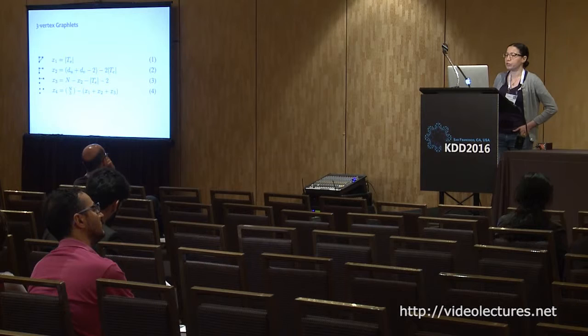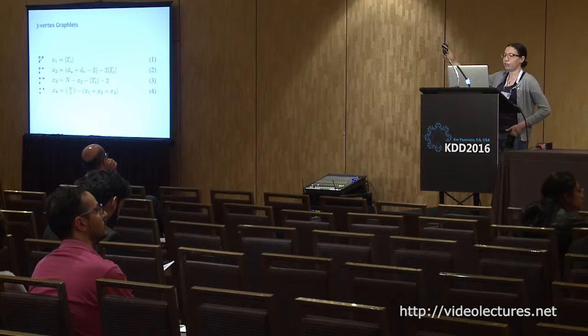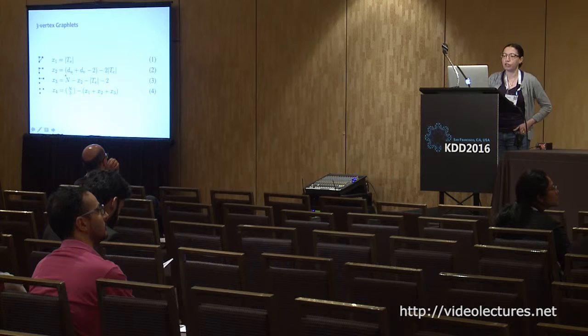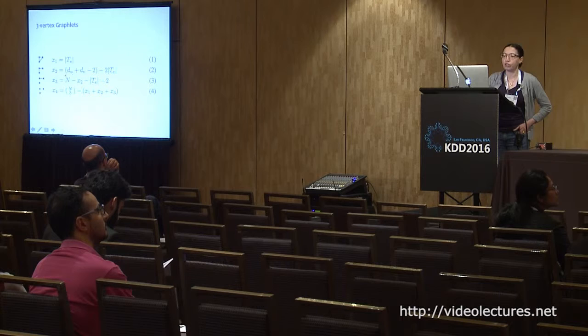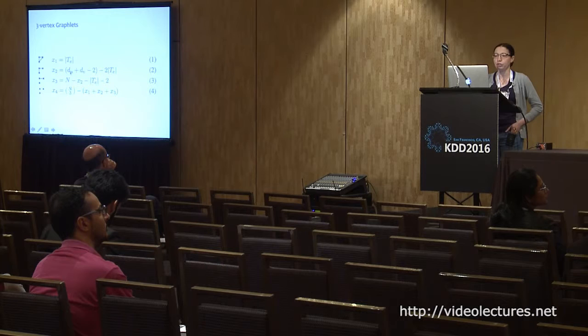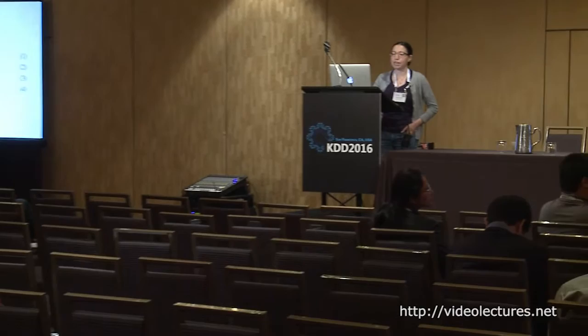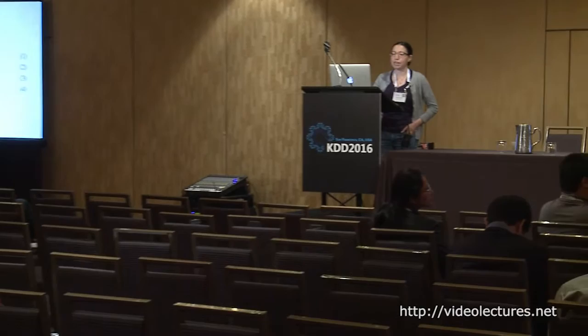To give some notion of how these equations work: for the three-vertex graphlets, the first equation gives X1, the triangle count — how many triangles are incident to an edge E. X2 relates to X1 via other properties, namely the degree of node U and degree of node V. If you already have the number of triangles, you can easily derive X2 from the node degrees. Similarly, X3 relates to the number of triangles and nodes as well as X2. So essentially all you need to count is the number of triangles.